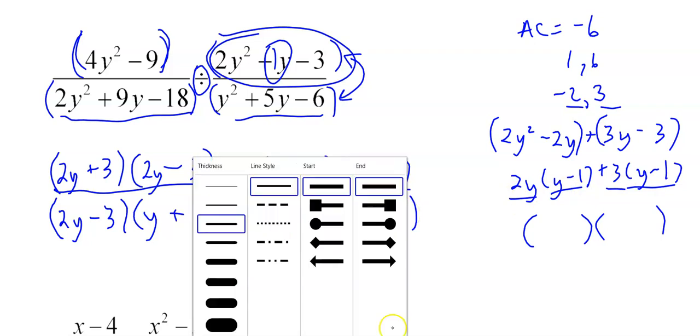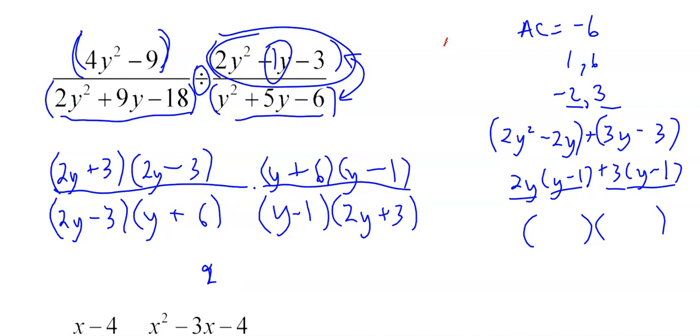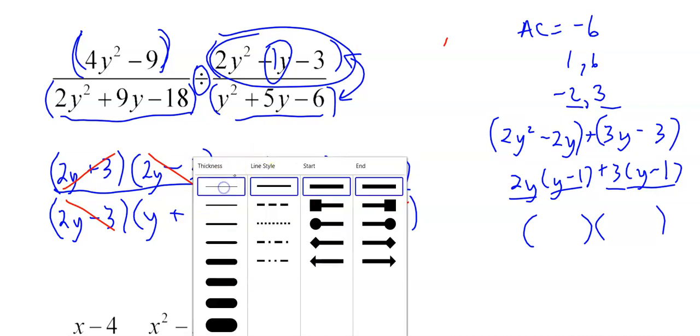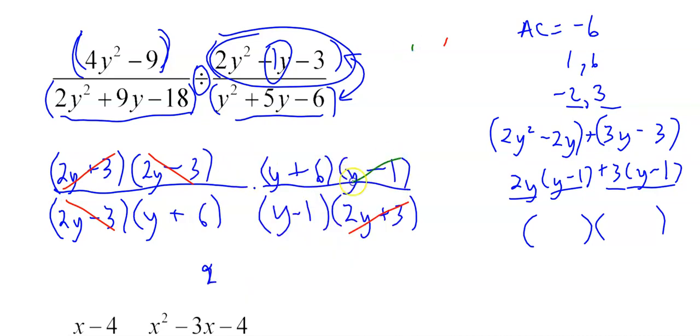So let's see what cancels here. This should be fun. I told you the best problem for last. 2y plus 3, 2y plus 3, that's nice. 2y minus 3, 2y minus 3, that's really nice actually. Let's see what else we got to cancel. y minus 1, y minus 1. y plus 6, y plus 6. Oh my goodness, everything cancels. By the way, when you cancel you leave a 1 behind, so this would be 1 divided by 1 or 1. The answer is actually 1. After all that work. Wow.